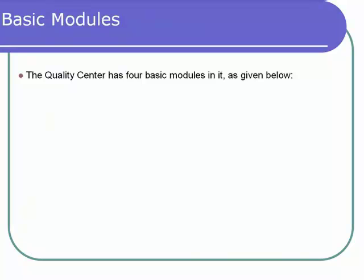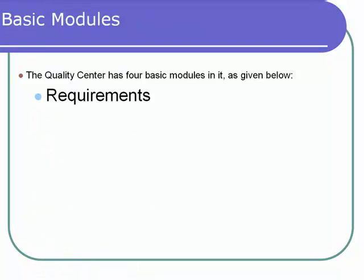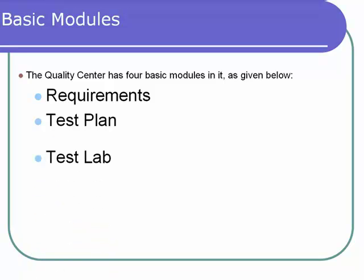Quality Center is divided into different modules based upon its functionalities. The four basic modules in Quality Center are: Requirements, Test Plan, Test Lab, and Defects. The Requirements module is used to capture the requirements. The Test Plan module is used to create test plans. The Test Lab module is used to execute the test plans. The Defects module is used for defect tracking.